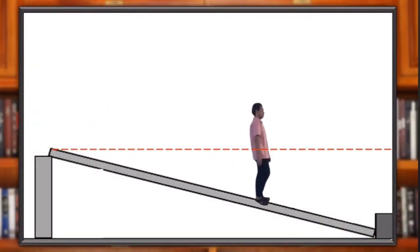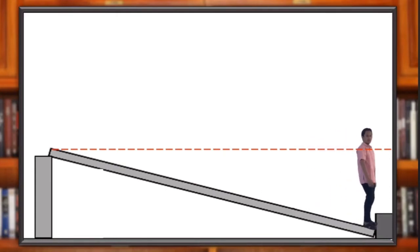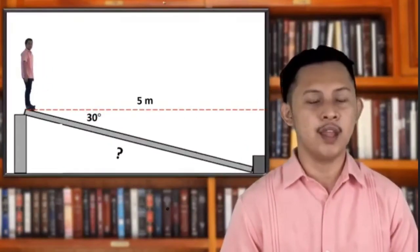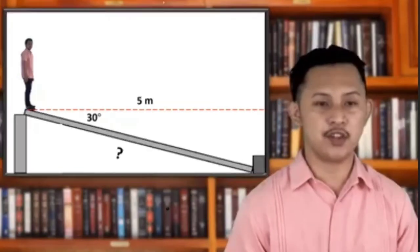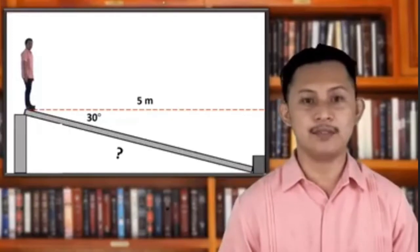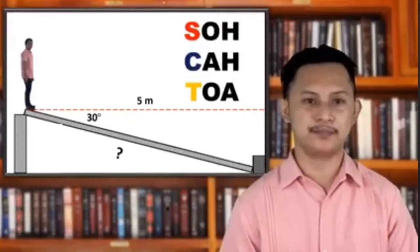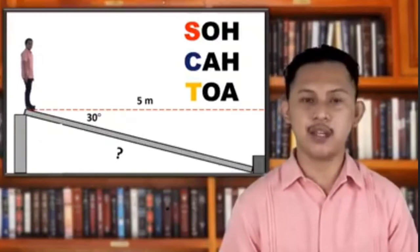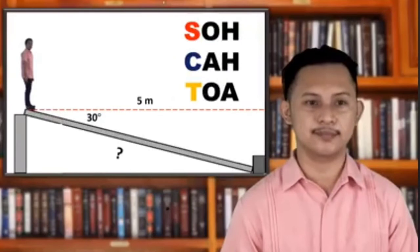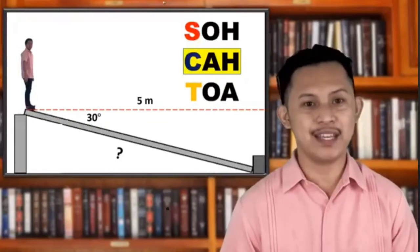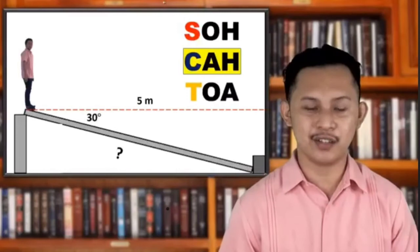Let's try to solve an angle of depression using this example. Suppose that a person is going through the ramp downwards. The horizontal distance from the person to the object below is 5 meters, with an angle of depression of 30 degrees. What is the length of the ramp? Since we are given the length of the adjacent side and our unknown is the hypotenuse with respect to the 30-degree angle of depression.